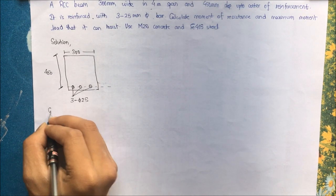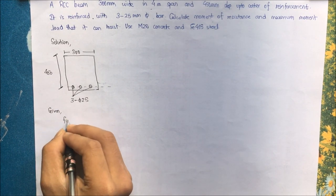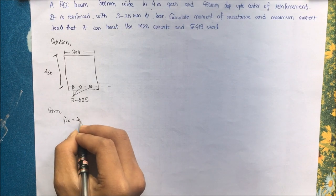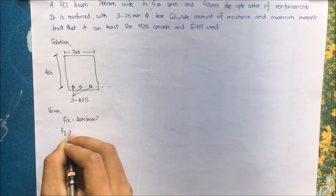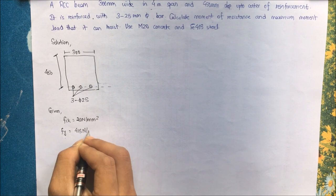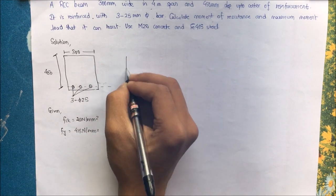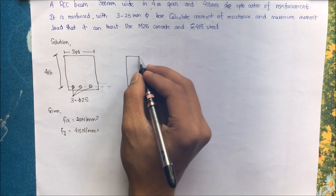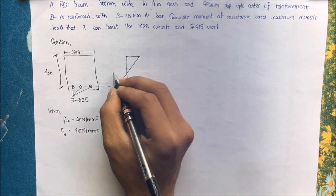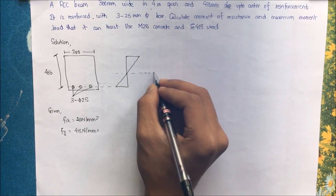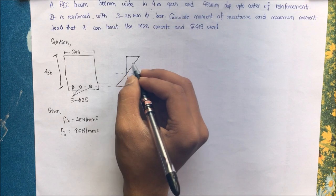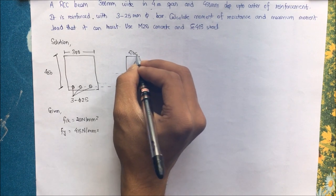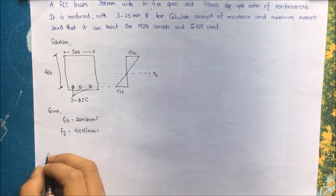Given that fck, that is the characteristic strength of the concrete, is 20 Newton per mm square, and fy, that is the yield strength of steel, is 415 Newton per mm square. Let us draw the stress diagram. This being the neutral axis, we will consider the actual depth, sigma cbc and sigma st, compressive bearing capacity and stress in steel in tension.